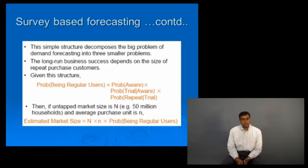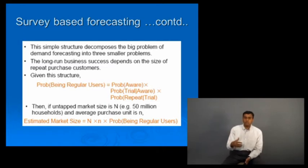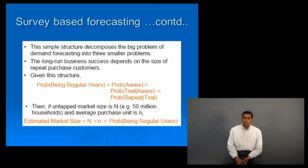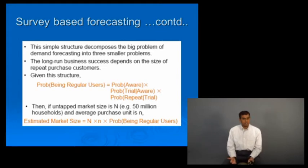The probability of becoming a regular consumer is a combination of these three probabilities: awareness probability, then conditional trial probability, then conditional repeat probability. To calculate expected market size, multiply this combined probability for regular consumers by the total market. And if on average people purchase n units each time they purchase, you have your total market size. That's the simple way to do it.